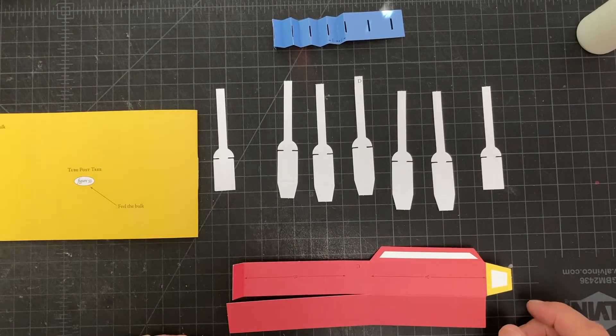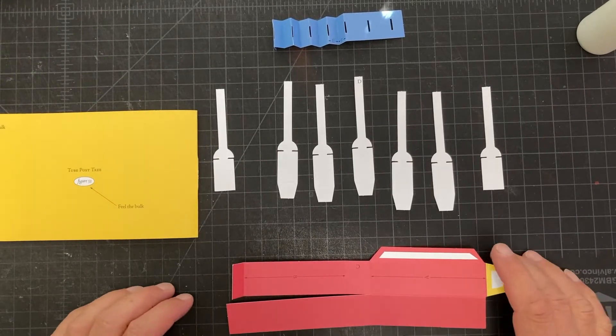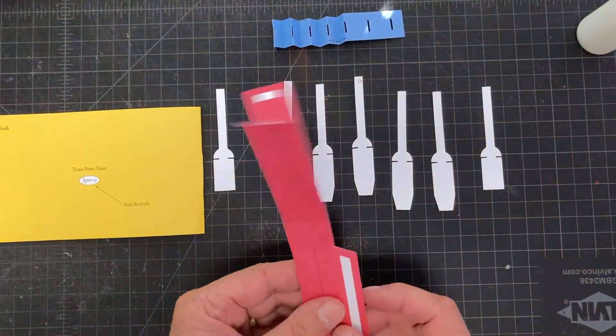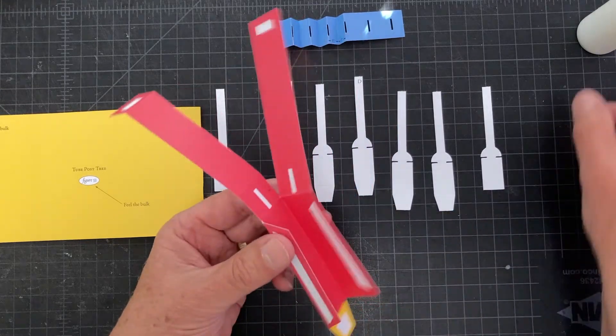All right, here we are assembling the tube post tree, figure number 53 from the Complexities of Pop-Up. I'm starting with the centerpiece, which we call the tube post.